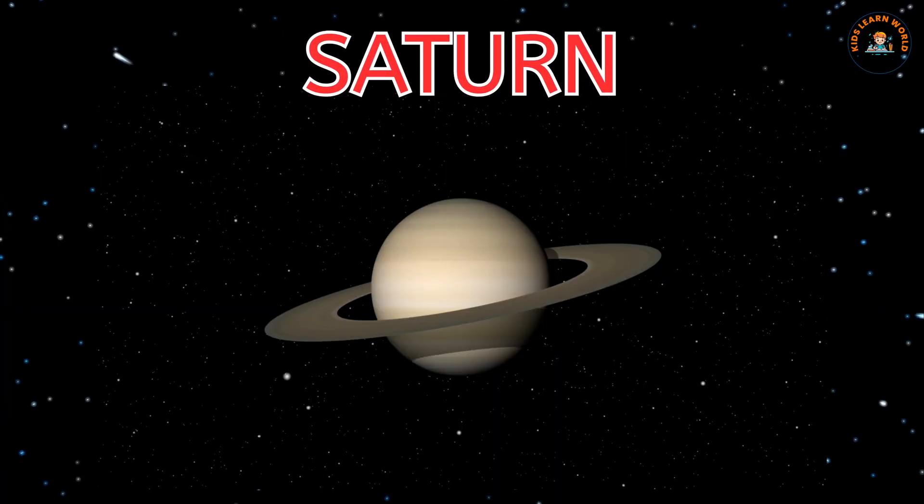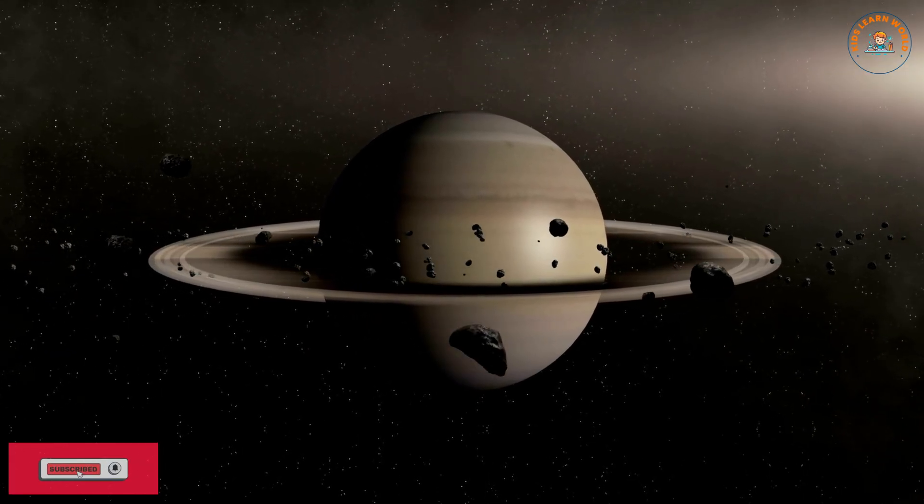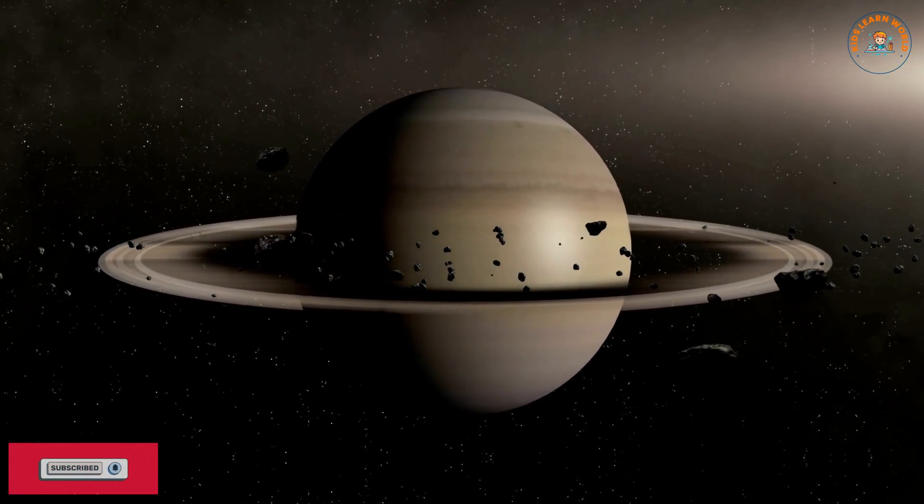This is Saturn. Saturn has beautiful rings made of ice and rock. It's one of the prettiest planets.